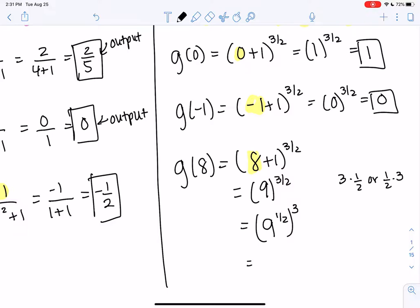And then if we remember, and if not, here we go, 1 half powers are the same as square roots. So we know the square root of 9 is 3. So then we'll say 3 cubed, which is 27.